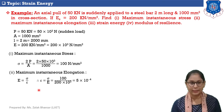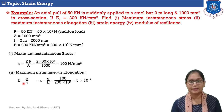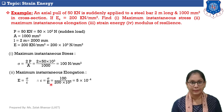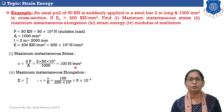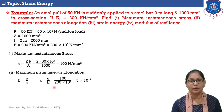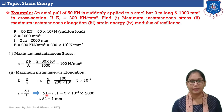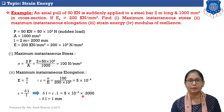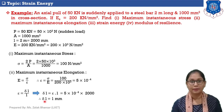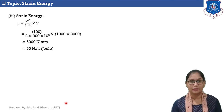Now let's calculate maximum instantaneous elongation. Stress equals E into strain, so strain epsilon equals sigma upon E = 100 / (200×10³) = 5×10⁻⁴. Since strain equals delta L by L, delta L equals strain into length = 5×10⁻⁴ × 2000 = 1 mm. So the maximum instantaneous elongation is 1 mm.